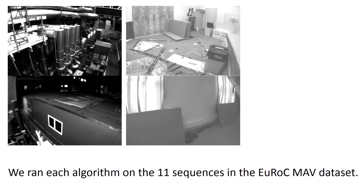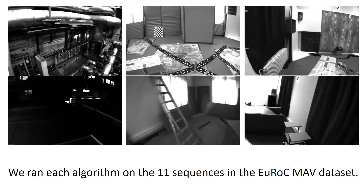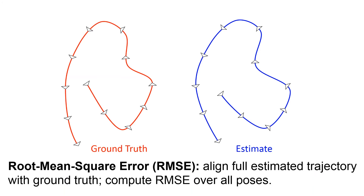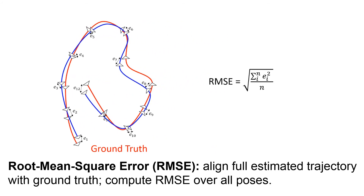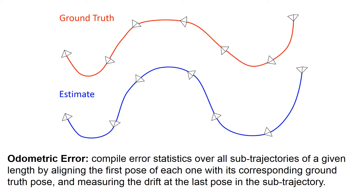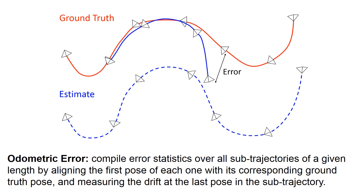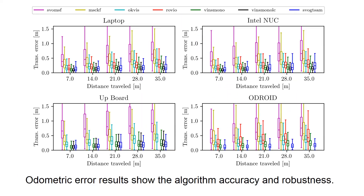We ran each algorithm on the 11 sequences in the EuRoC MAV dataset, which is the only dataset containing synchronized camera images and IMU data. We evaluated accuracy in pose estimation using two metrics. Root mean square error is calculated by aligning the full estimated trajectory with the ground truth and computing the RMSE over all poses. For odometric error, error statistics are compiled for all sub-trajectories of a given length, by aligning the first pose with its corresponding ground truth pose and measuring the error at the last pose in the sub-trajectory.